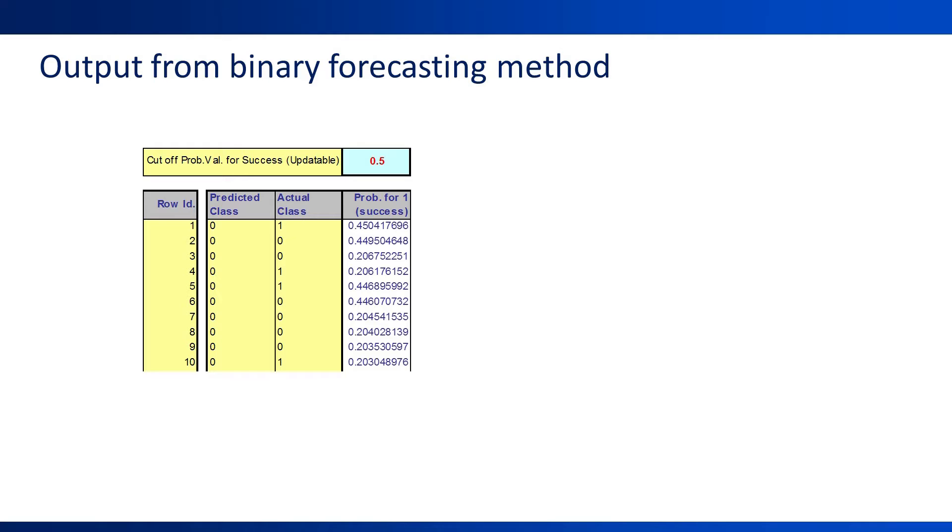For example, the first observation has a forecasted probability of 0.45 that it will rain. Comparing 0.45 to the cutoff of 0.5, the binary forecast is set to 0.